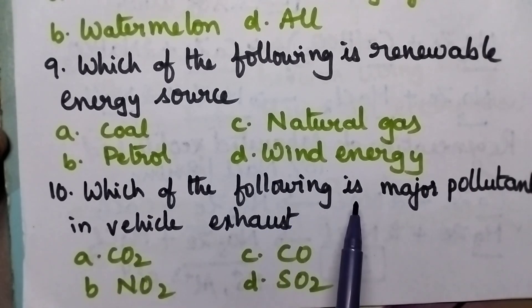Which of the following is major pollutant in vehicle exhaust? A: Carbon dioxide, B: Nitrogen dioxide, C: Carbon monoxide, D: Sulphur dioxide.